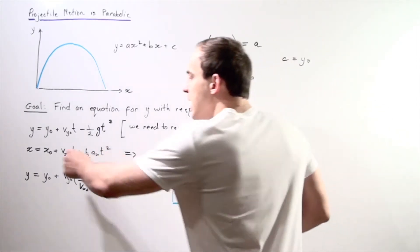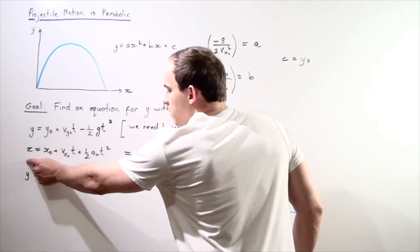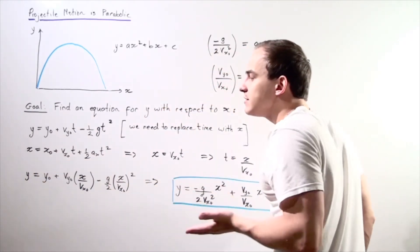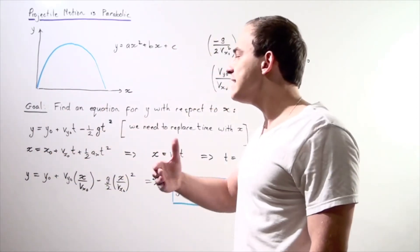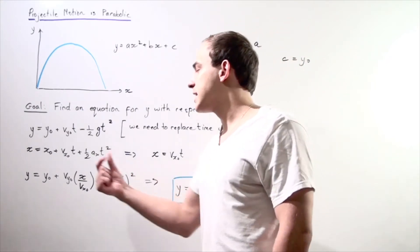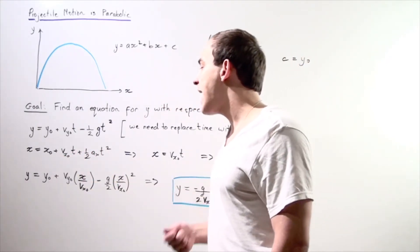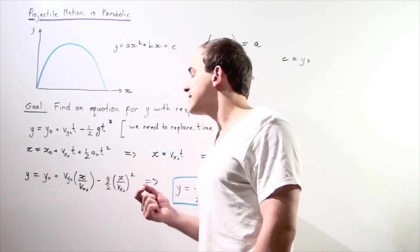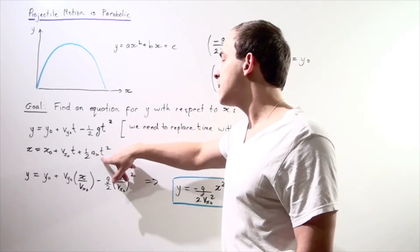So here we have our second equation that also comes from the fact that we have constant acceleration. Our final position along the x-axis is equal to our initial position along the x-axis plus our initial horizontal velocity times time plus one-half ax, where ax is simply our acceleration along the x-axis multiplied by time squared.